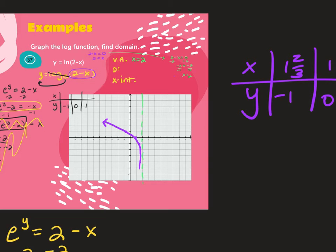If you think about transformations, 2 minus x is negative x plus 2, which is a reflection over the y-axis in addition to a horizontal shift. But if you just plot your points, it'll take care of the reflection for you automatically without needing to think about transformations.